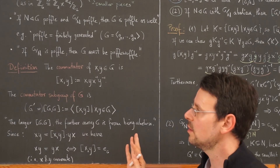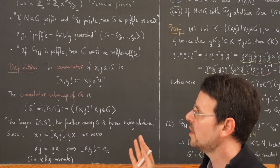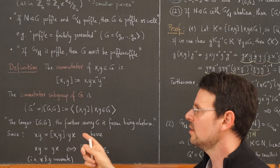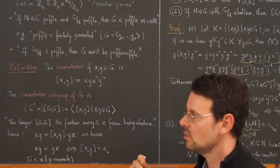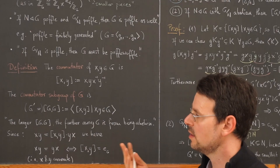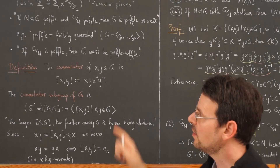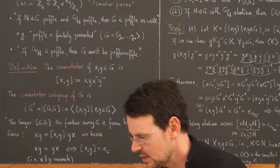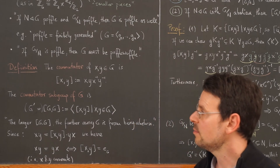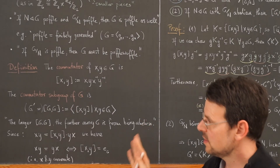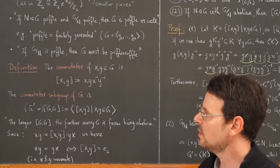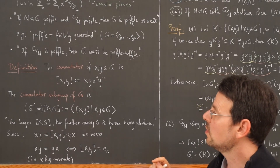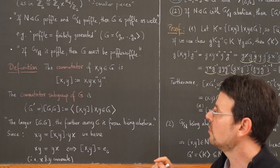Now we take a look at a very important subgroup of any group. This will play an important role if we ever get to solvability of algebraic equations. The so-called derived series will be playing an important role. Even if we don't get that far in our course, it's important that you have heard of the so-called commutator subgroup of a group.